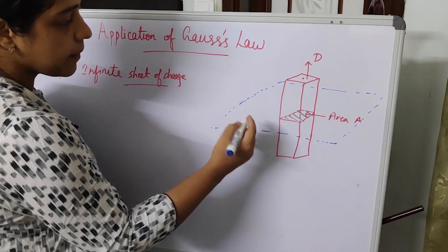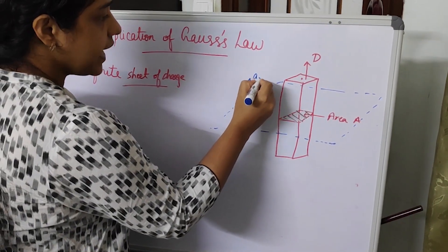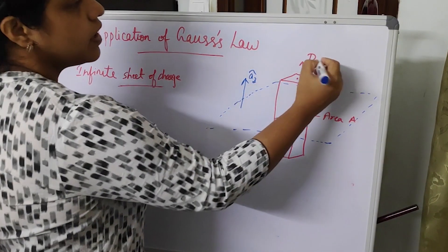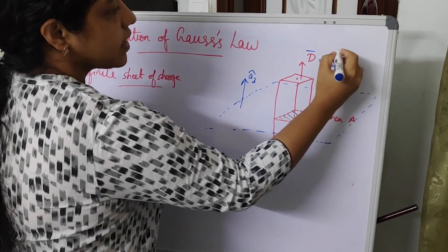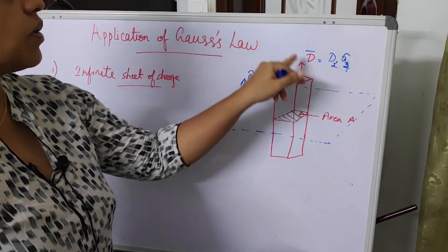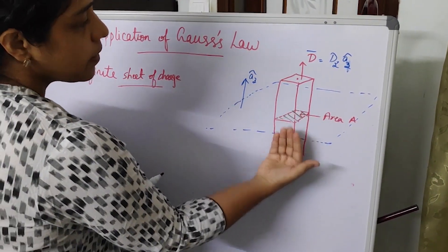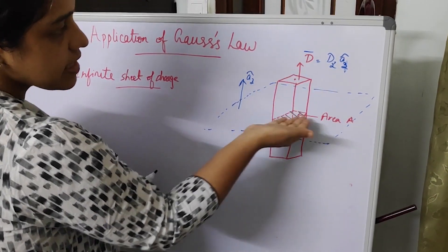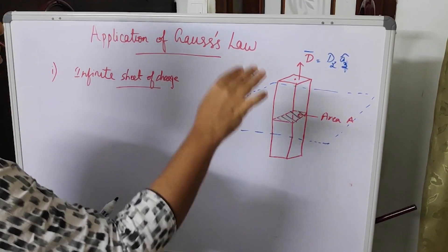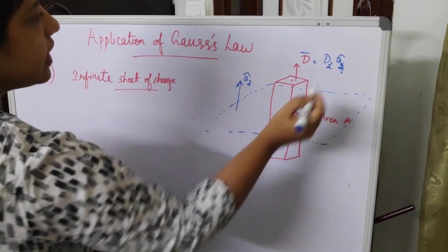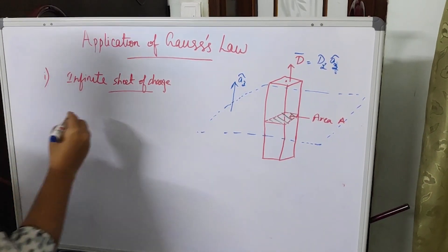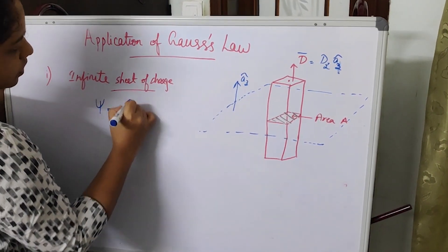Since the sheet is in the XY plane, the perpendicular component is in the A_Z direction. Vector D has only a Z-component, written as D_Z A_Z. The area vector is also perpendicular to the XY plane, so both D and the area vector dS are in the Z-direction. Now we apply Gauss's law: ψ equals Q enclosed.